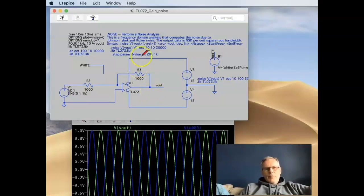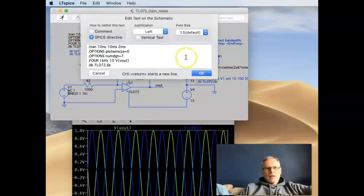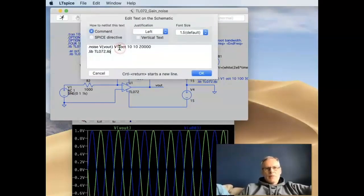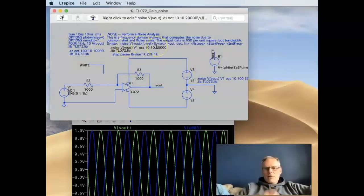What's more important is if maybe we want to look at the noise analysis of this circuit. So let's just disable the transient analysis there and re-enable the noise analysis. Now this is pretty much identical to the directive in the previous example.